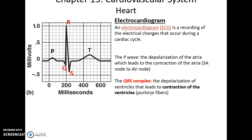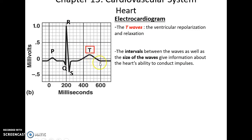You can measure the cardiac conduction system using an electrocardiogram, which detects electric currents passing through the heart and displays them in graph form, recording the electrical changes during the cardiac cycle. The P wave is the depolarization of the atria as they start to contract. The QRS complex is the depolarization of the ventricles when they contract. The T wave is the ventricles repolarizing and relaxing. The spacing and shape of these features can indicate if there is some issue in the heart.